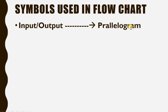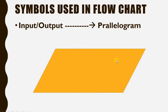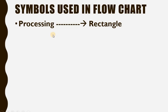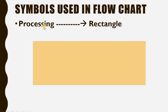The next symbol is the parallelogram. We use the parallelogram in flowcharts for representing input and output. It is basically a tilted rectangle. Then for processing, we use the rectangle symbol to represent a processing operation.